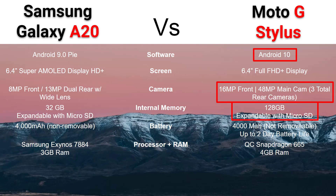Processor-wise, one is going to be Samsung Exynos and one is going to be Qualcomm. You are getting an extra gig of RAM on the Stylus — four gigs versus three — so the Moto does take it in that category. Now let's jump into weight. The A20 is slightly lighter than the G Stylus. You can definitely feel that the G Stylus is a little weightier and a little bit thicker, which is something important to keep in mind if you're not a big fan of heavier phones.